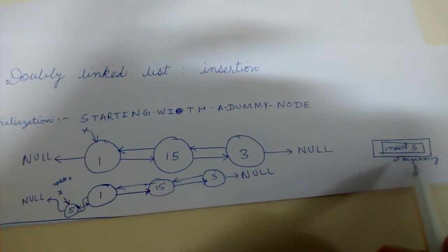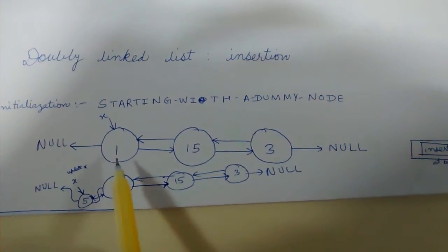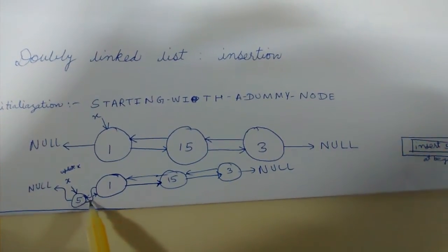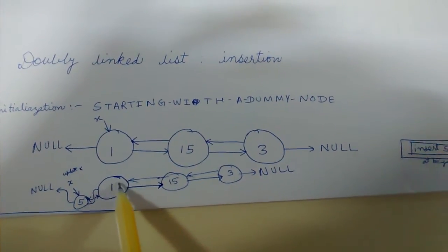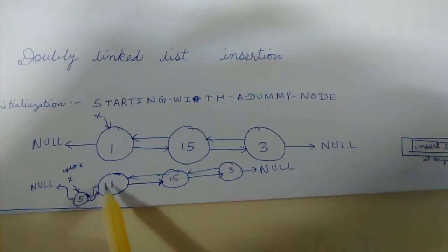So what we will do is, five's forward pointer we will point to the beginning of the list, the earlier beginning of the list, and the earlier beginning of the list, that is X's backward pointer, will now point to five.